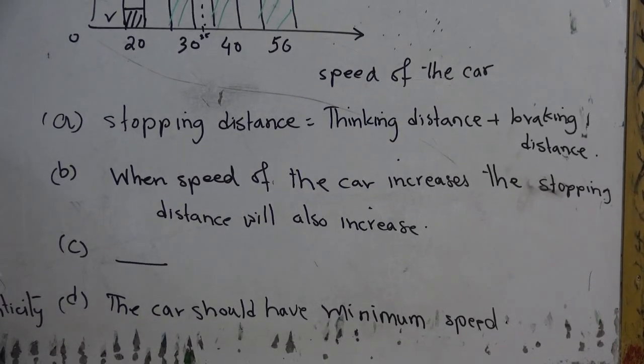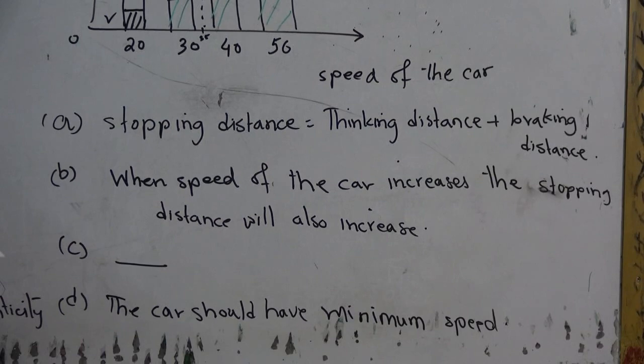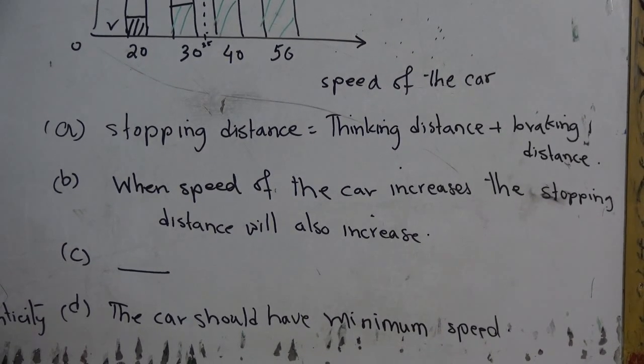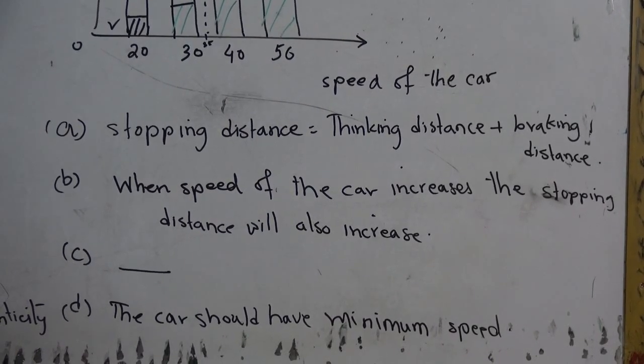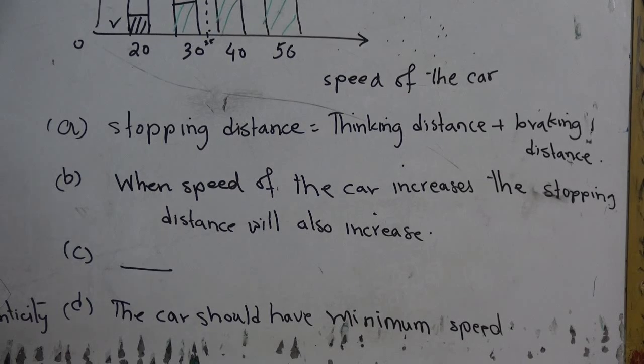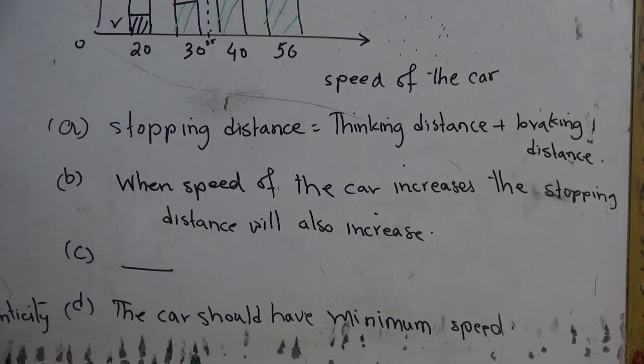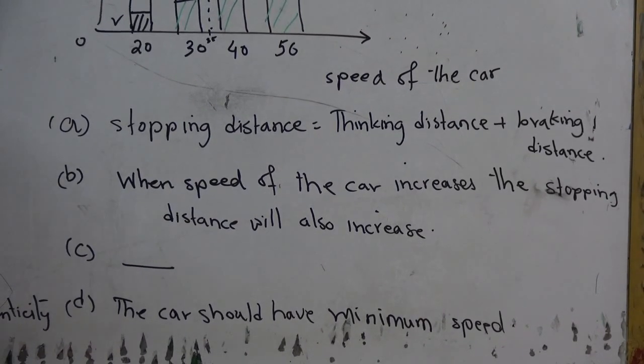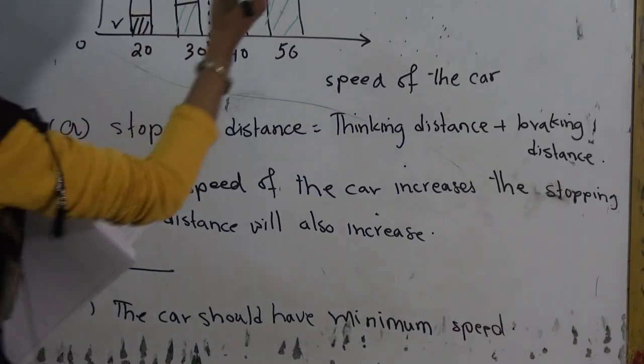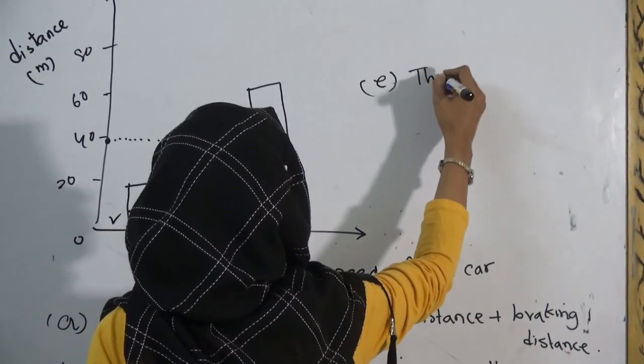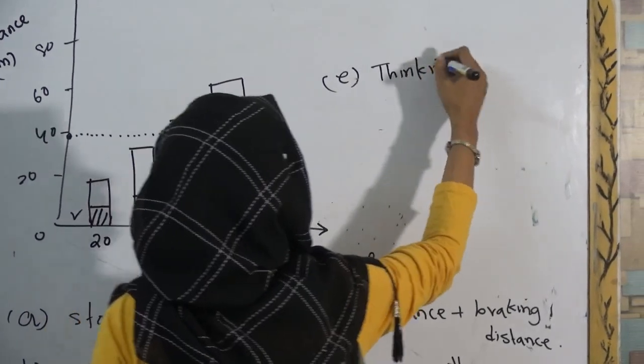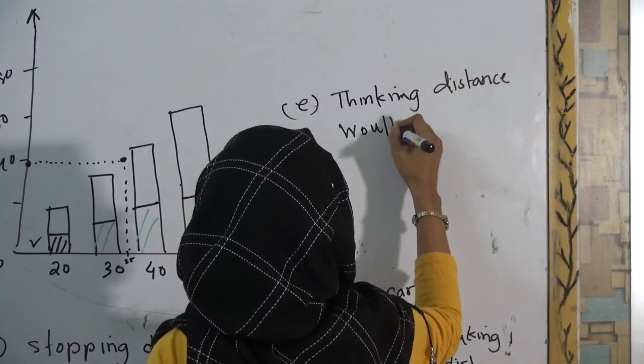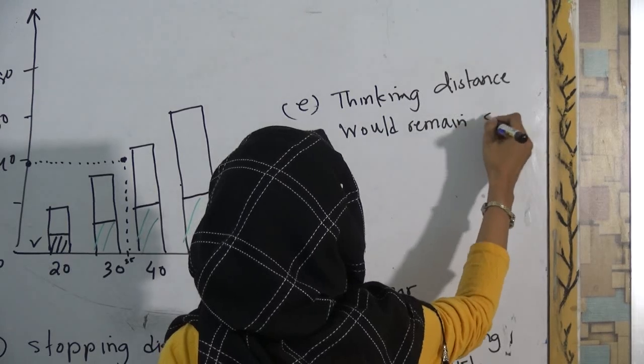Number E, the tests were carried out on a dry road. If the road is icy, friction reduced, describe and explain what changes there would be if any to the thinking distance. Now, thinking distance actually depends on the driver. Here, they are saying that the condition of the road has changed. Therefore, there would be no change. There would be no effect on the thinking distance. Answer of E would be, thinking distance would remain same.